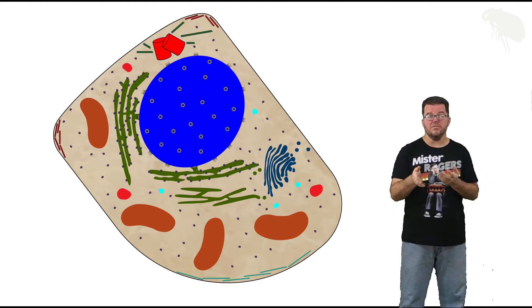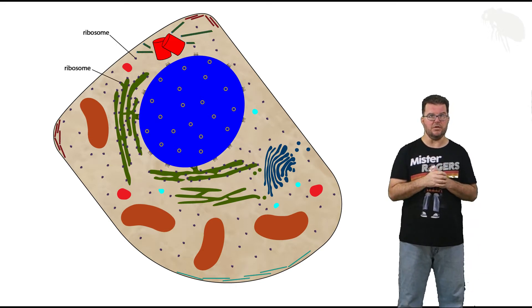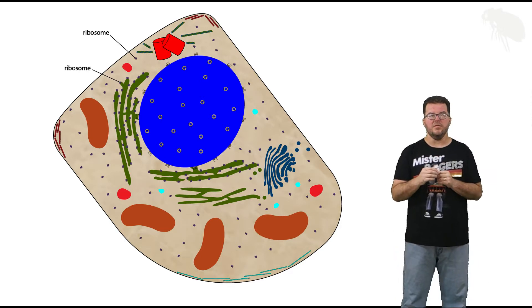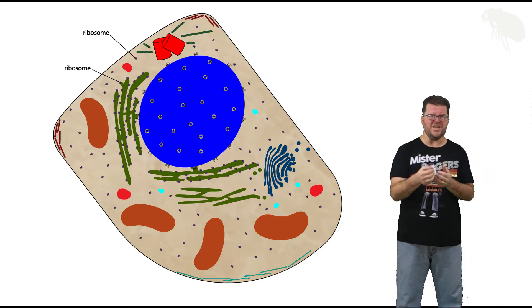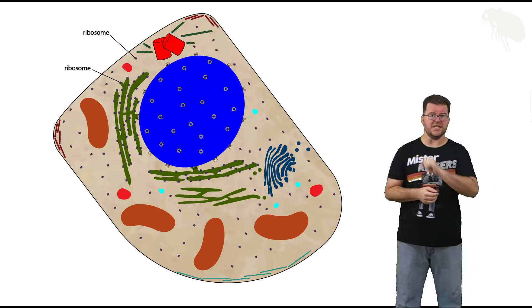Now ribosomes are tiny, they don't have membrane. I've gone ahead and labeled two of them because there are a lot of them in that figure. I'm only going to label two, but to really understand them we need to look at them more closely because like I said they're tiny. So let's take that top one and just zoom in.